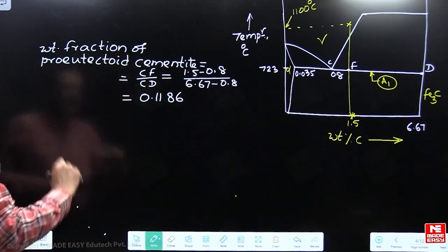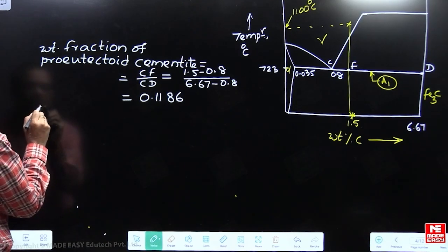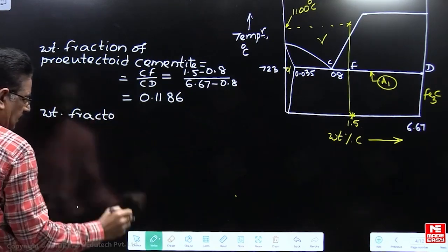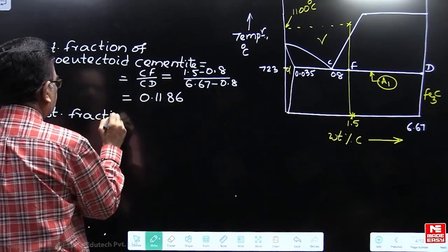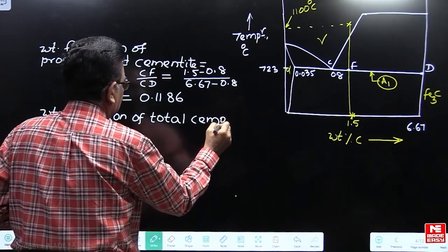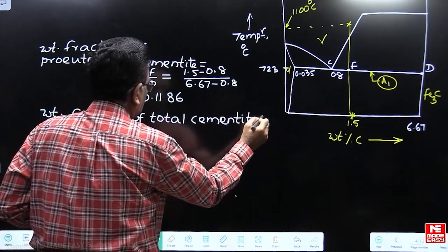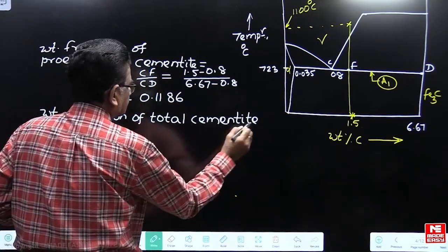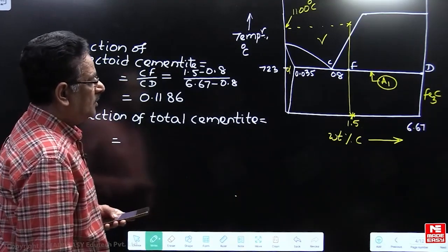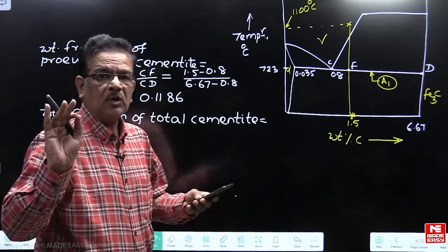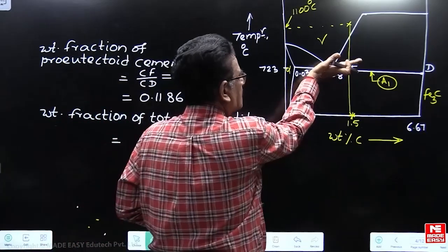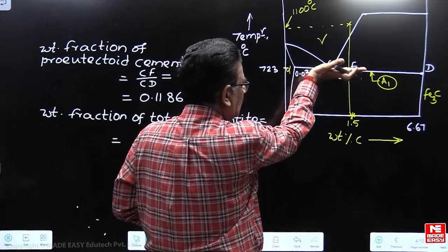This gives the weight fraction of pro-eutectoid cementite as 0.1186. Now we have to find the weight fraction of total cementite present in this 1.5% carbon steel. The total cementite phase is evaluated below A1, because the steel is cooled to just below the A1 line or eutectoid temperature line.